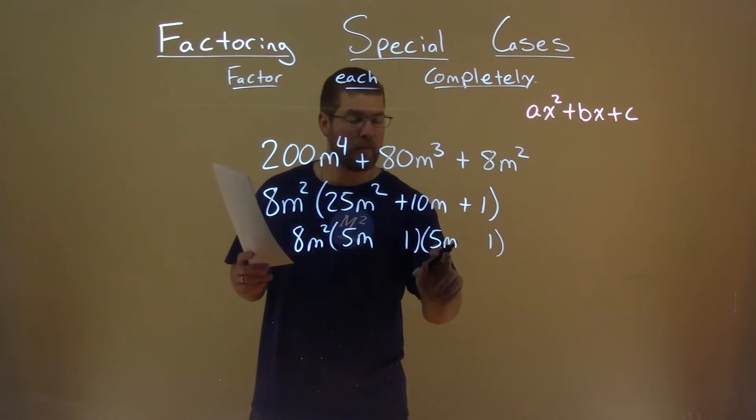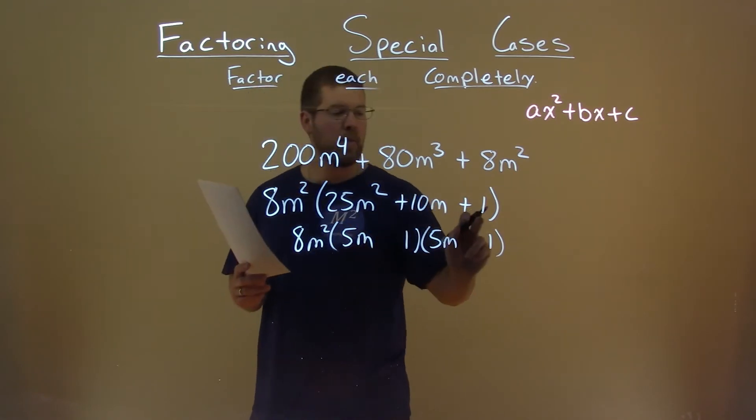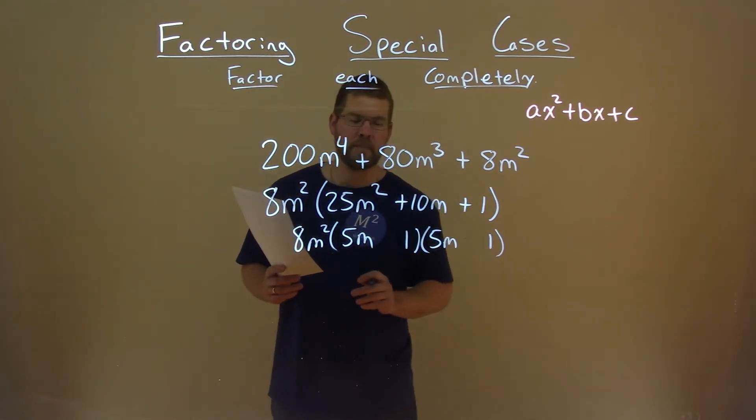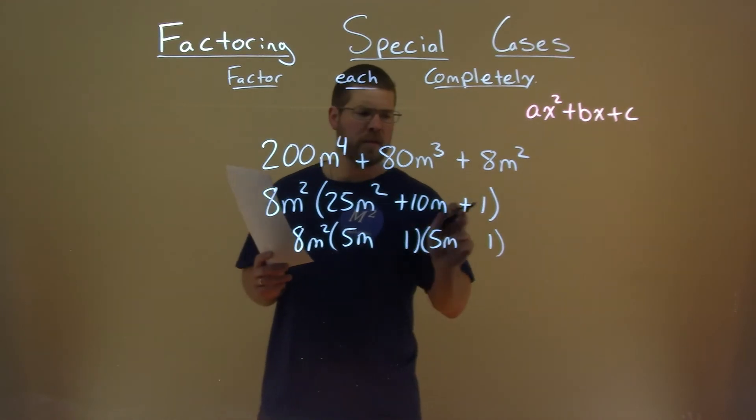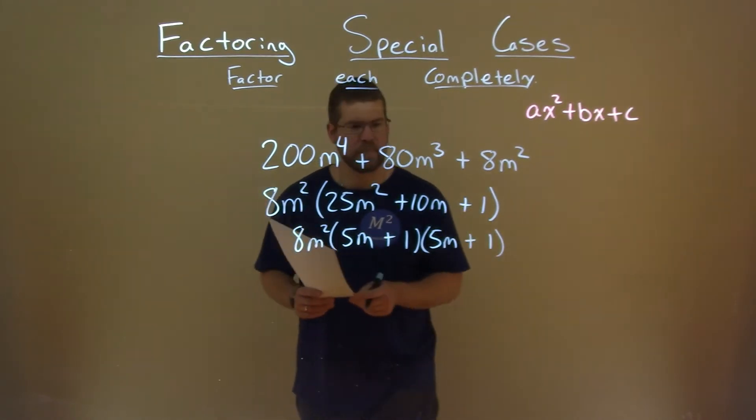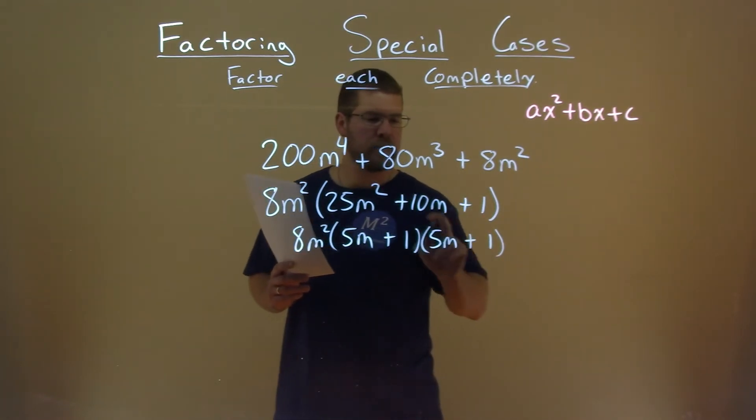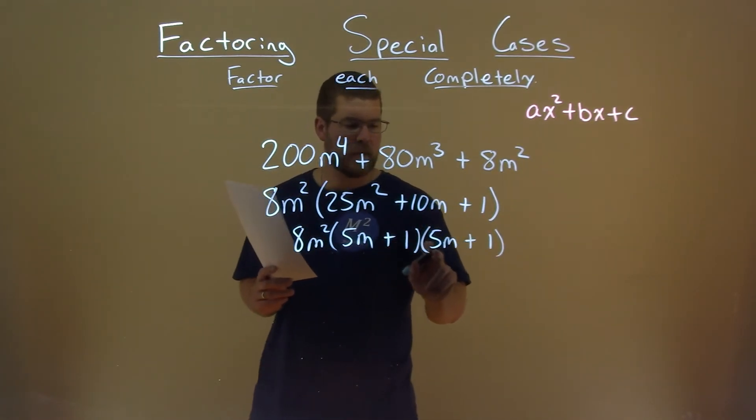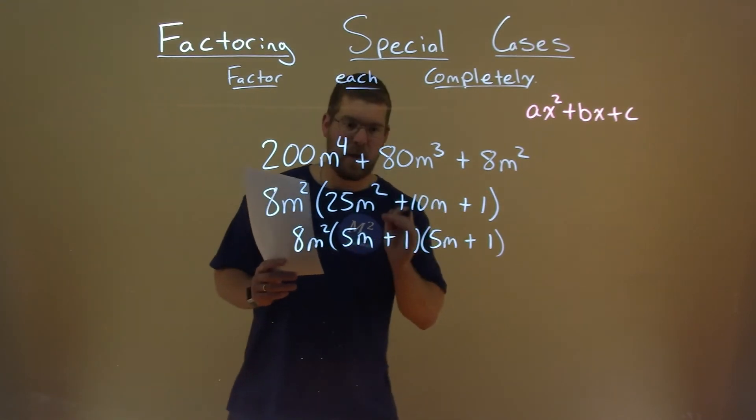So 5m times 5m is 25m squared, 1 times 1 is 1. Well, it's a positive 1, and we have a positive 10m in here, so I'm going to put a plus sign here and a plus sign there. Now watch this. 5m times 1 gives me 10m. 1 times 5m gives me 10m as well.